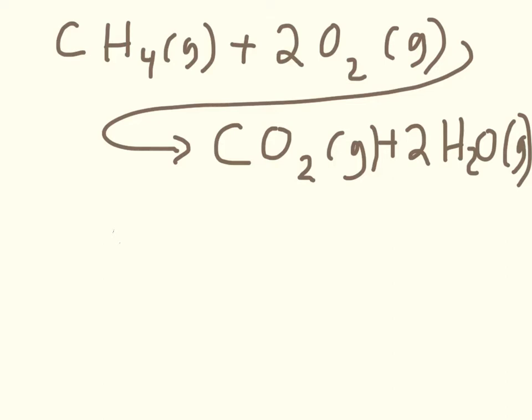Suppose we consider the combustion of methane with oxygen to form carbon dioxide and water. So we form two molecules of water, one molecule of carbon dioxide. And you can use bond enthalpies to estimate the delta H for this reaction. Delta H for this reaction is approximately equal to negative 682 kilojoules per mole. So that's what we get if we estimate this from bond enthalpies.